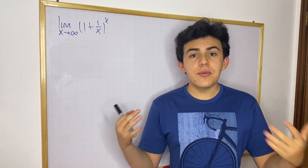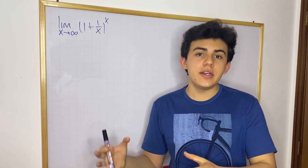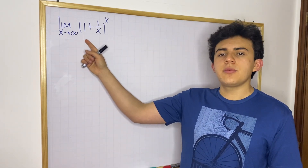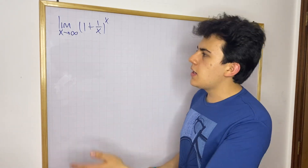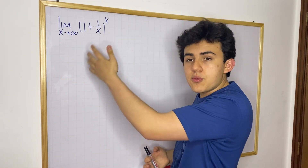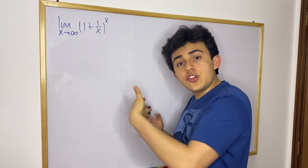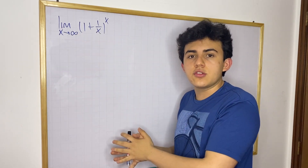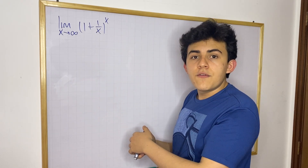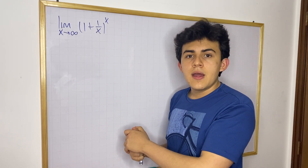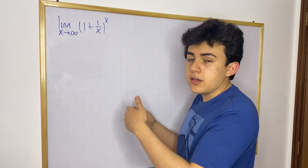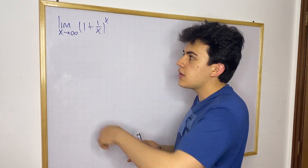Hey guys, what's up? So today I want to show you one of the applications of linear approximations to a particular problem in math about Euler's number. You know that Euler's number can be written in terms of a certain limit. Something pretty cool is that if you want to compute this limit and show that it is indeed equal to e, you can use a linear approximation for the natural log function. Let me show you how.